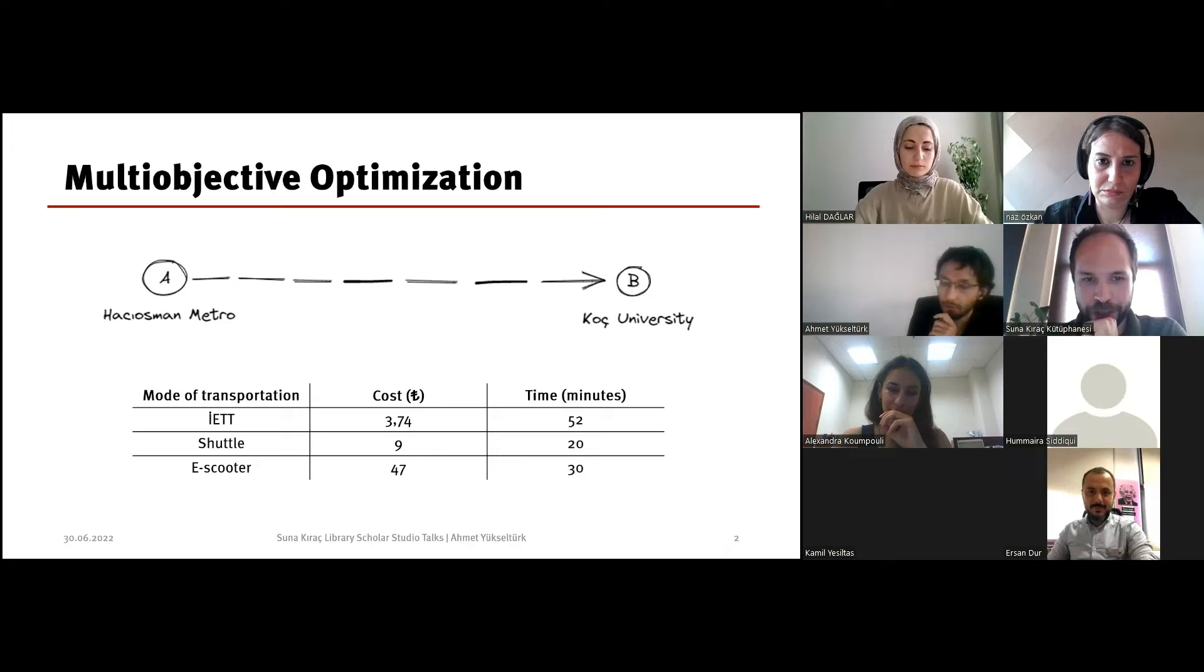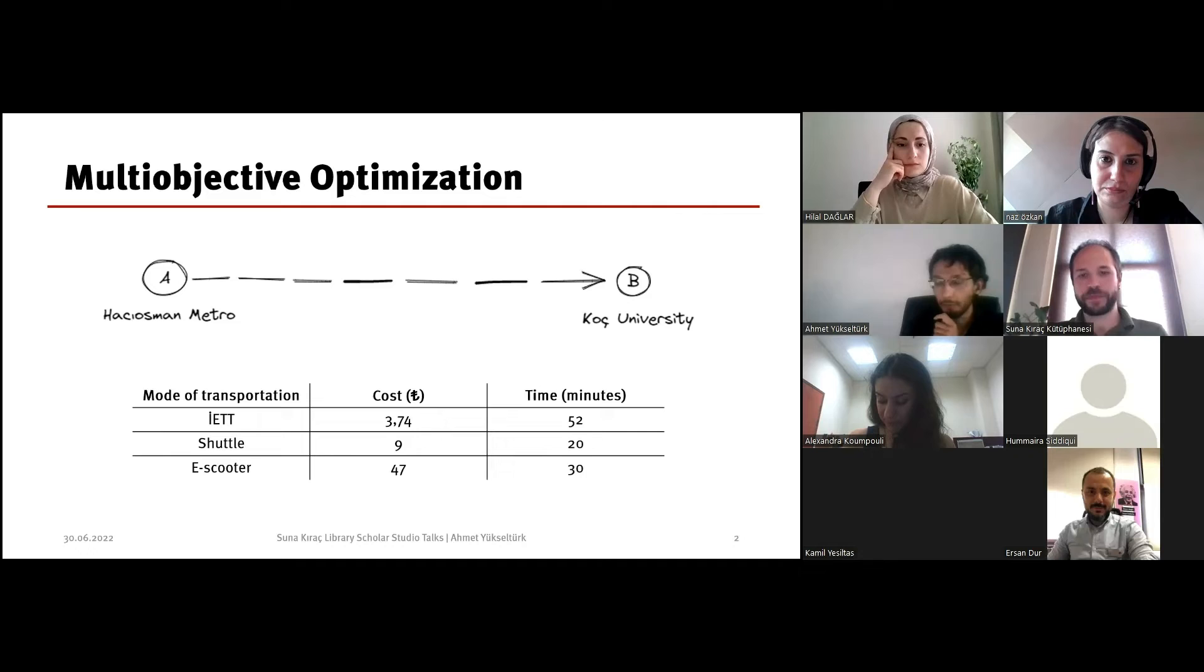These are also called Pareto solutions. Public transportation is still a Pareto solution because if I decrease the time, I will get more expensive transportation. So public transportation is again a multi-objective optimization optimum solution.